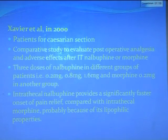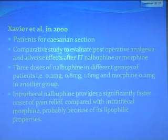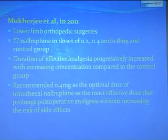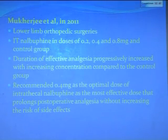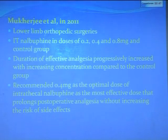Xavier et al. in 2000 studied patients undergoing cesarean section, comparing three doses of nalbuphine — 0.2, 0.8, and 1.6 mg — against morphine 0.2 mg, finding that intrathecal nalbuphine provides a significantly faster onset of pain relief compared with intrathecal morphine, probably due to its lipophilic properties. Mukherjee et al. in 2011 studied lower limb orthopedic surgeries using nalbuphine doses of 0.2, 0.4, and 0.8 mg, finding that the duration of effective analgesia progressively increased with dose, but recommended 0.4 mg as the optimal dose.